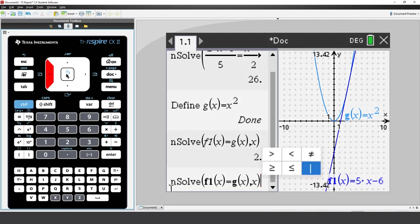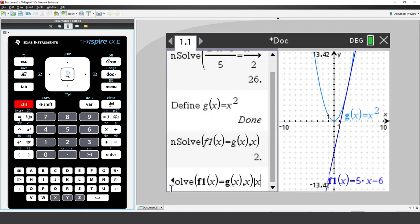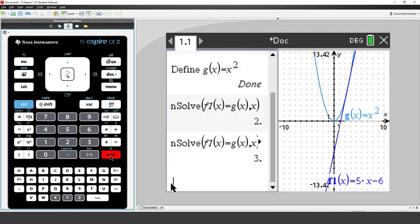The second solution seems to be to the right of 2, so I can put in a domain constraint to say given that x is greater than 2. Then press Enter. So, x equals 3 is another solution.